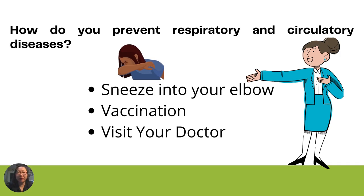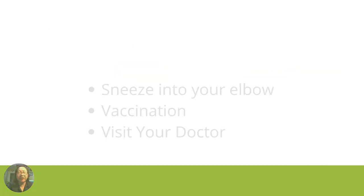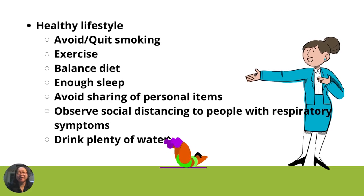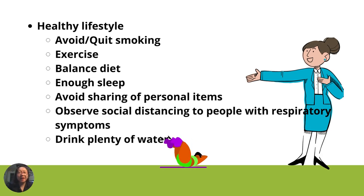How do you prevent respiratory and circulatory diseases? Sneeze into your elbow and not into your hands, because you hold things like doorknobs with your hands, thus transferring the virus to others. So always wash your hands with water and soap. If not available, use alcohol or sanitizing gels. Another one is vaccination for your immunity. Visit your doctor regularly. Another way of preventing respiratory and circulatory diseases is to have a healthy lifestyle: avoid or quit smoking, exercise, balanced diet, enough sleep, avoid sharing of personal items, observe social distancing with people who have respiratory symptoms, and drink plenty of water.